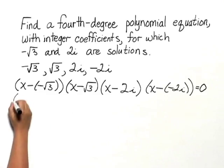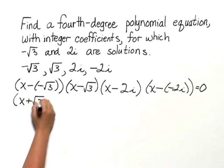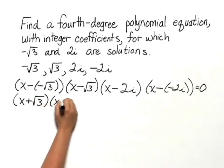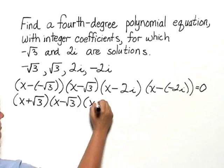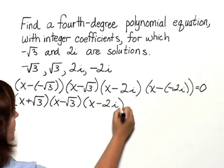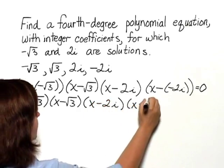let's write this as x plus the square root of 3, and then we have x minus the square root of 3. Then we would have x minus 2i times x plus 2i, and that equals 0.